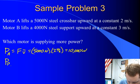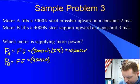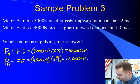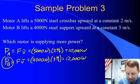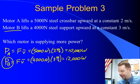Motor B, same formula, force times average velocity, but it has to overcome or supply a force of 4,000 newtons to lift the steel support at a constant 3 meters per second for a total of 12,000 watts, or 12 kilowatts. So which one supplies more power? Motor B. Very straightforward calculation.